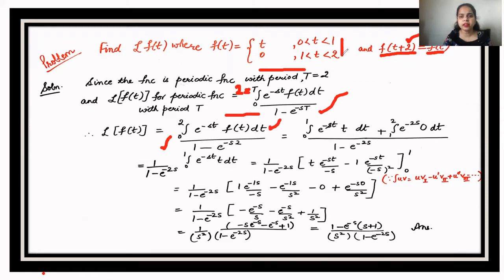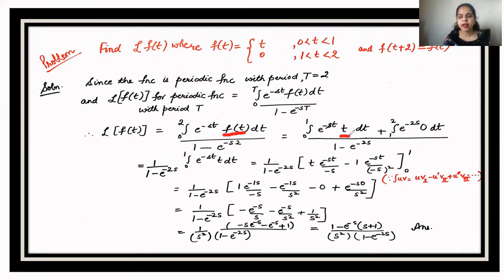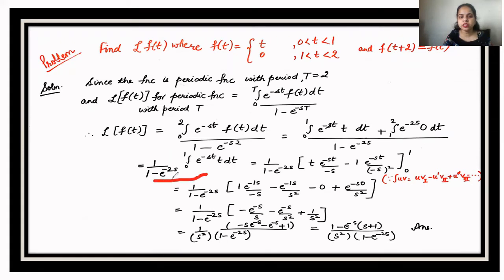Using the periodic function formula with T = 2, we get the integral from 0 to 2 of e^(-st) f(t) dt, divided by (1 − e^(-2s)). We break the integral into two parts: 0 to 1 and 1 to 2. For 0 to 1 the function equals t, and for 1 to 2 the function equals 0, so the second integral vanishes.